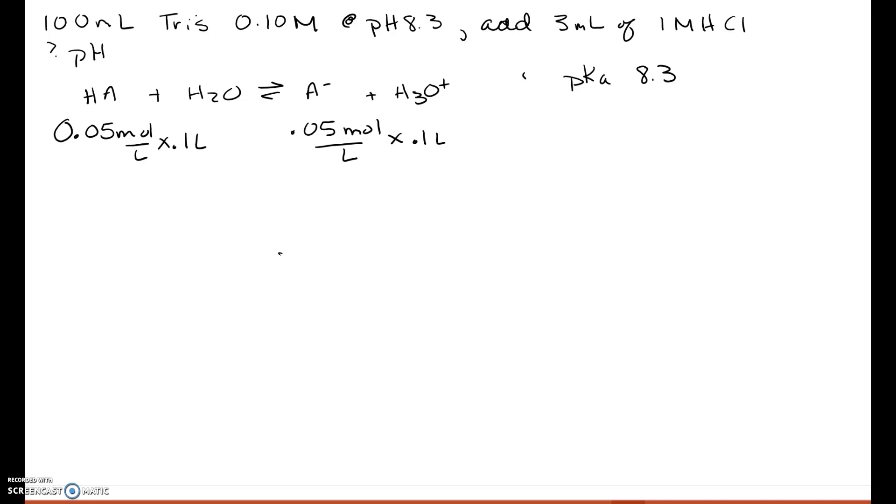So I can calculate the number of moles of weak acid and conjugate base. That gives me 0.005 moles of HA and 0.005 moles of A minus. Now, when we add the HCl, it's going to take A minus and protonate it to make HA. So we need to calculate how many H pluses are added to our solution to take away from the conjugate base and make the weak acid.